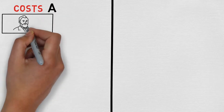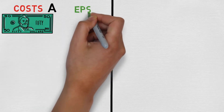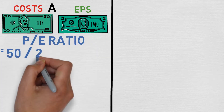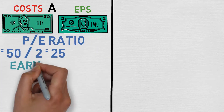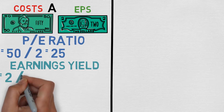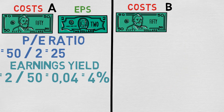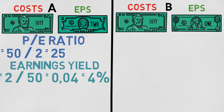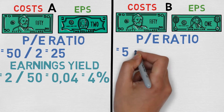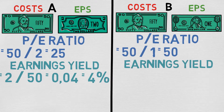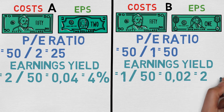For example, if stock A costs $50 and its EPS for the past year was $2, the P/E ratio would be 50 divided by 2, which equals 25. The earnings yield would be 2 divided by 50, which equals 4%. If stock B costs $50 and its EPS for the past year was $1, the P/E ratio would be 50 divided by 1, which equals 50. The earnings yield would be 1 divided by 50, which equals 2%.